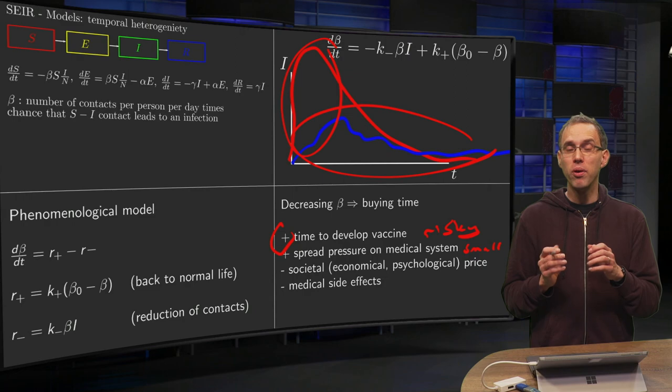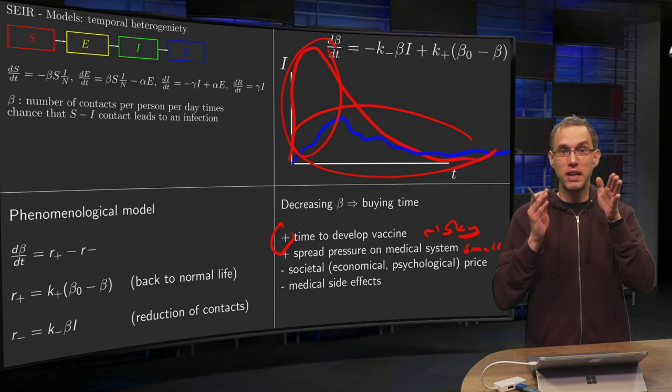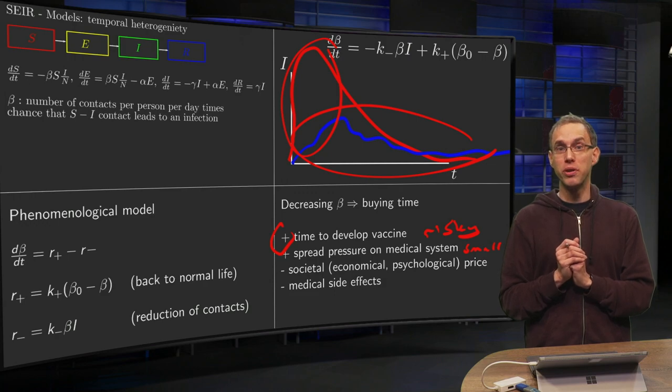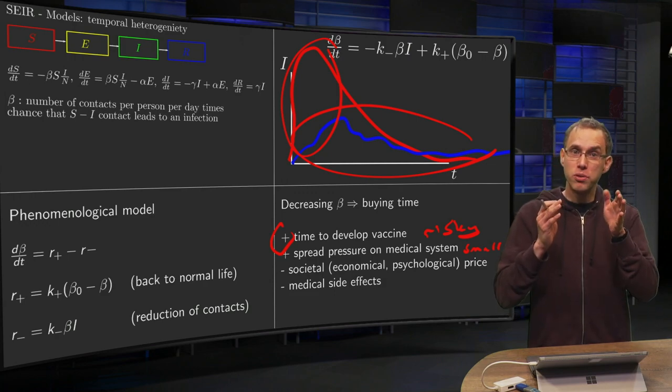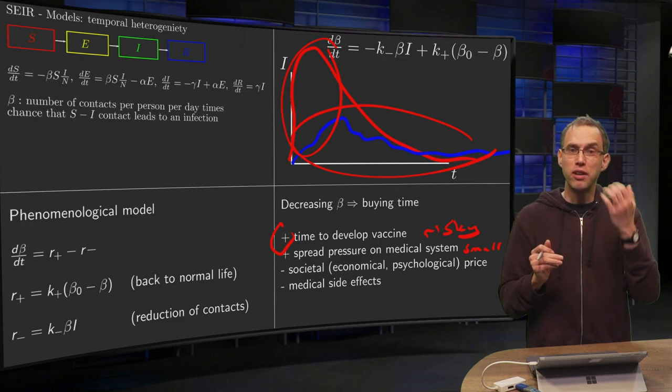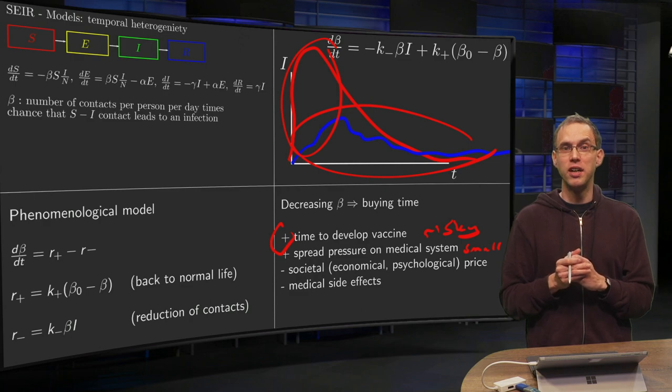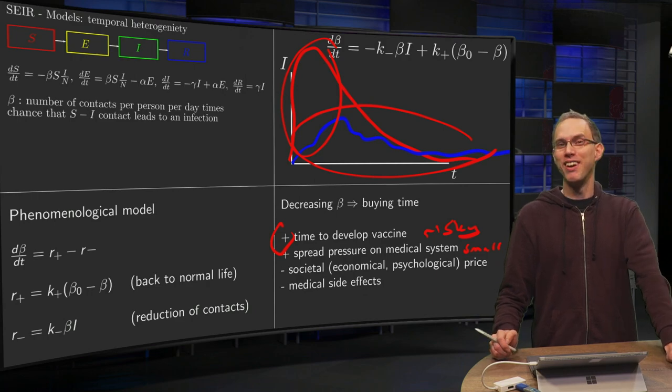So all in all, what you really should do before doing anything is make a mathematical model to model this properly, to be able to weigh the benefits versus the dangers and compute what is the best strategy beforehand. You see again how mathematics is important everywhere in life.